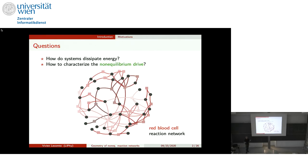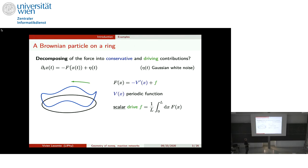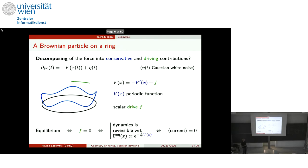It's difficult to know where the drive comes from in these settings. Let's start with the simplest system: a particle on a ring with position x, force f, and noise η. If we decompose the force as minus the derivative of a periodic function plus a constant scalar f, the potential V(x) describes conservative motion. The scalar f describes the drive — one is at equilibrium if and only if this drive is zero, meaning the dynamics is reversible with respect to the Boltzmann weight with potential V.